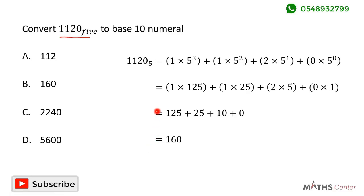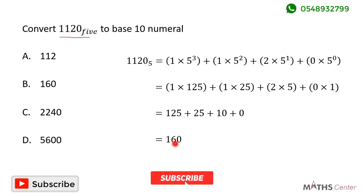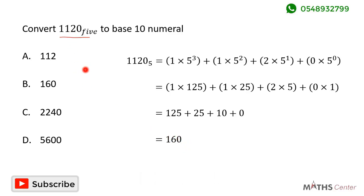So converting 1120 base 5 to base 10 gives us 160. Looking through the options, the correct option is B.